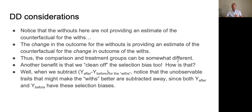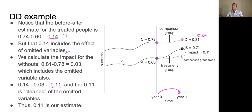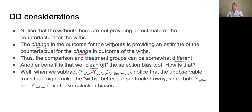Notice that the withouts are not providing an estimate of the counterfactual level for the withs — that would be a with-without comparison. What we're doing is using the change in the outcome for the withouts as an estimate of the counterfactual for the change in the outcome of the withs. That's the difference-in-differences. The comparison and treatment groups can be somewhat different; we're not saying the comparison group is a counterfactual for the level of the treatment group — we're looking at the change.